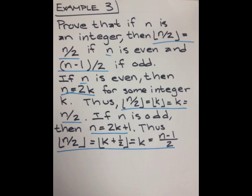Example number three: prove that if n is an integer, then the floor of n over 2 is equal to n over 2 if n is even, and n minus 1 over 2 if n is odd. If n is even, then n equals 2k for some integer k. Thus the floor of n over 2 is equal to the floor of 2k over 2, which is equal to k, which is equal to n over 2.